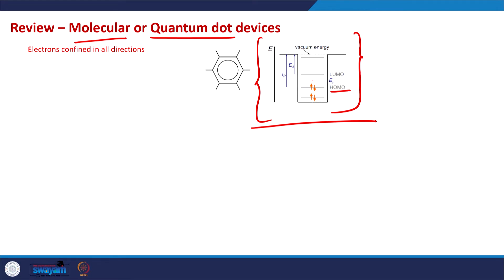The Fermi level will lie in between HOMO and LUMO if HOMO is completely filled and LUMO is, by definition, empty. In some molecules HOMO can be half-filled, in which case the Fermi level can be assumed to be on the HOMO level. If HOMO is completely filled, EF can be assumed to be exactly midway between LUMO and HOMO.